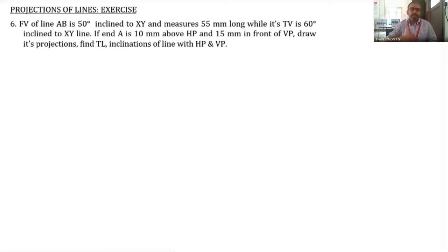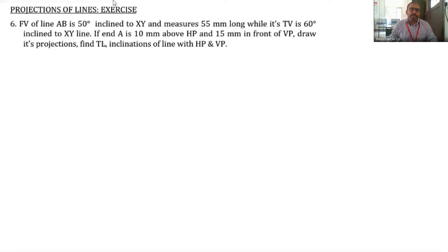We are moving on to the next exercise. The front view of a line AB is 50 degrees inclined to XY and measures 55 millimeters long, while its top view is 60 degrees inclined to XY. Point A is 10 millimeters above HP and 15 millimeters in front of VP. Draw its projections and find the true length and inclinations of the line with HP and VP.